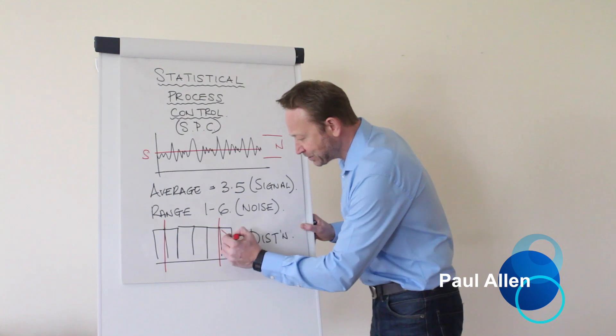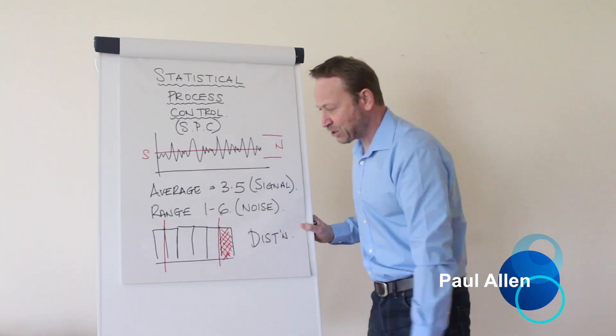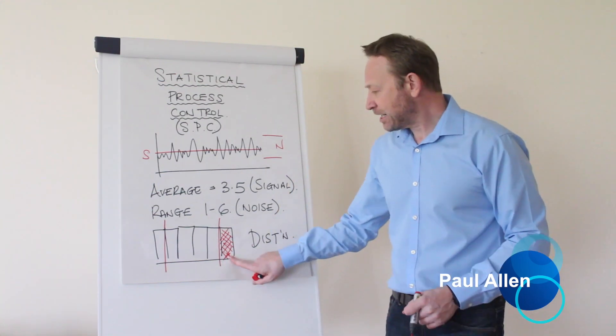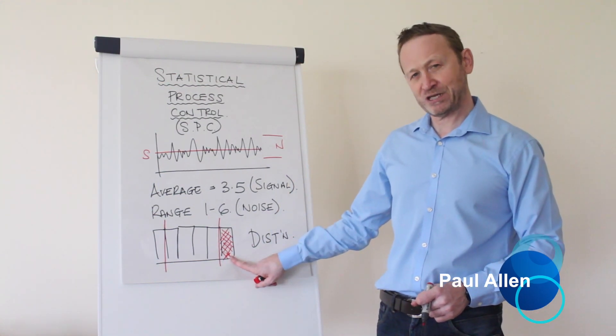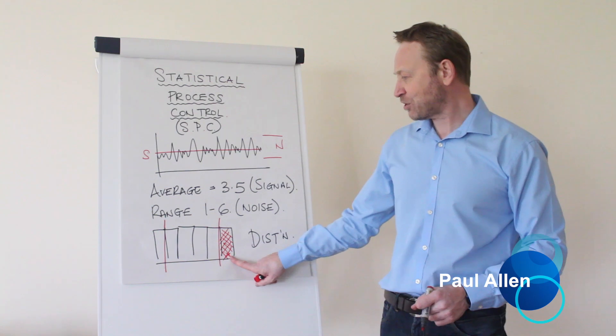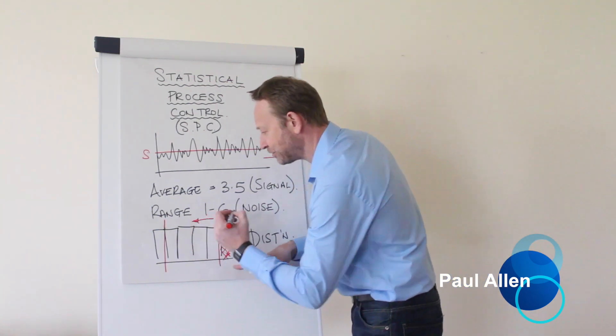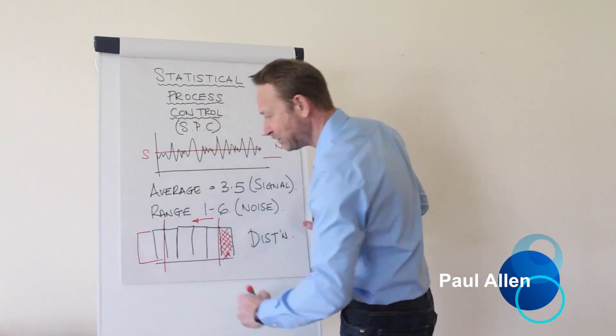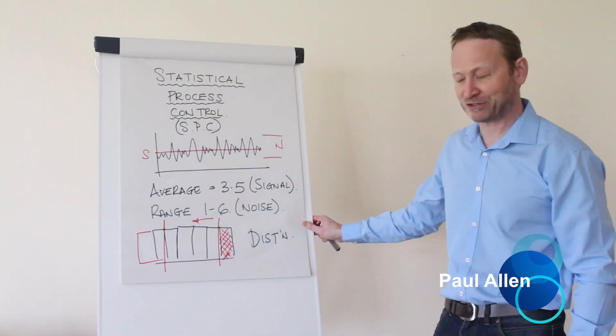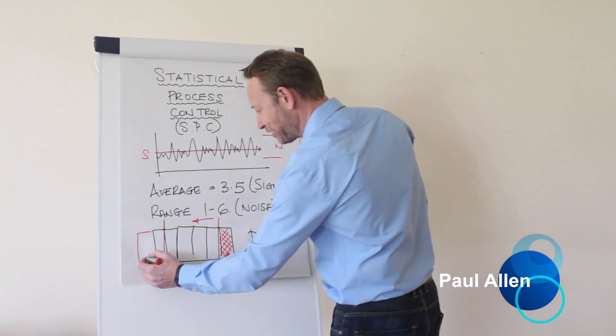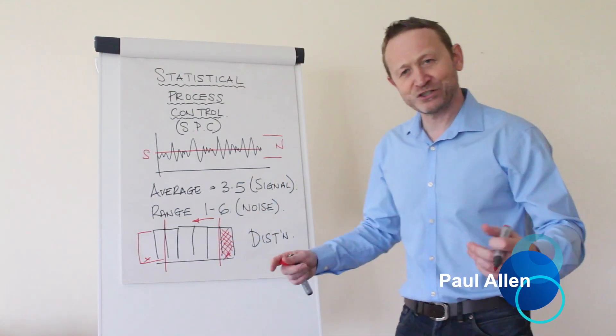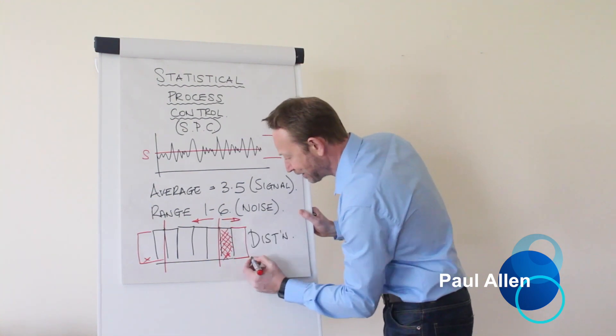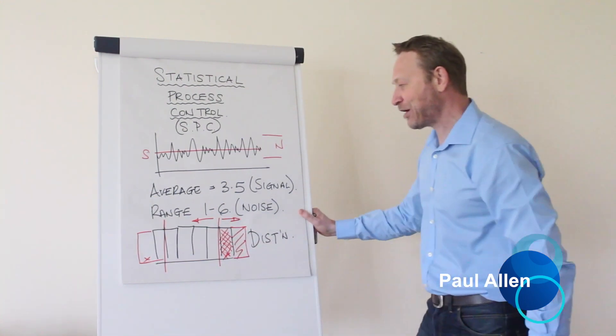Now when an operator gets a defect, what's his natural reaction? He wants to adjust this defect away, doesn't he? He wants to correct for it. So what he'll now do, he'll move this process in this direction. Let's say by 1. Of course I can now get 0s out this side. And he carries on running the process. And he gets a 0 out here. Now what does he do? Well, he shifts it back this way, doesn't he? Probably by 2. And suddenly now we can get 7s out over this side.